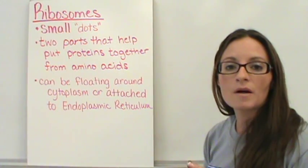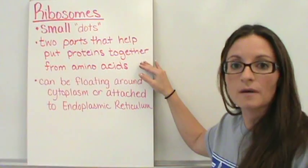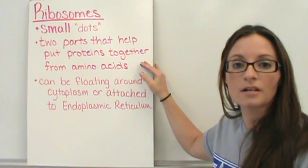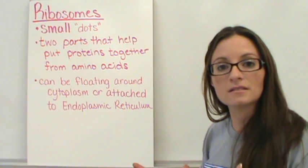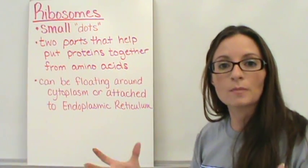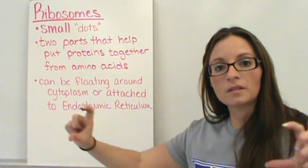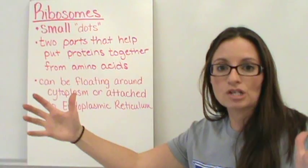But they are important because they have two parts to them that help put proteins together. So they take those amino acids, the monomers of proteins, and they link them together to make the polymer, to make those protein chains. So the ribosomes put the amino acids together into chains.